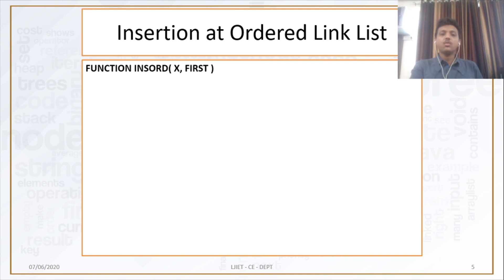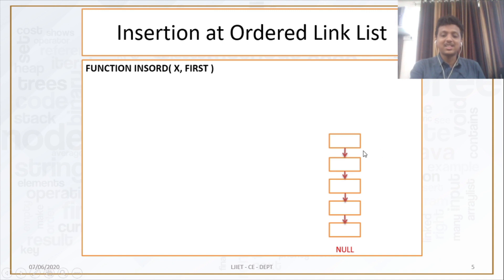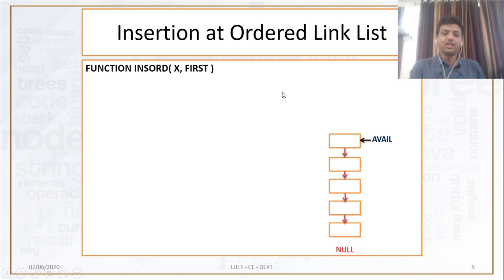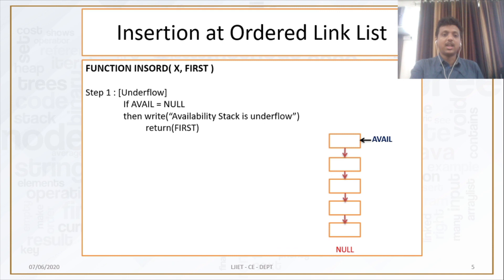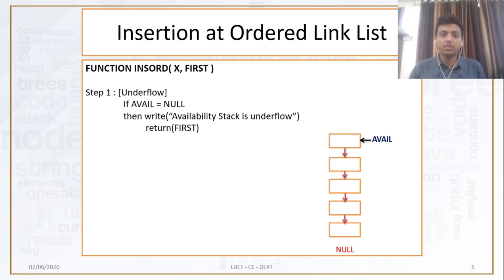What can be the first condition for insertion? For any type of insertion, we first need to check the space in the availability stack. If my avail pointer is pointing to null, then the availability stack is underflow. So the first step is to check the underflow condition: if avail is equal to null, then write underflow. If my availability stack is empty, I just return first, because first is a pointer which points to the first node of the list.